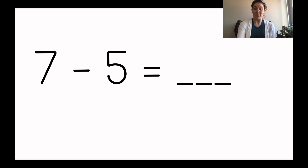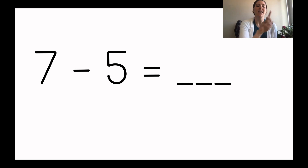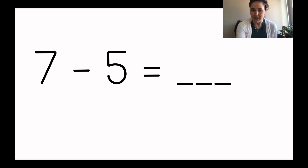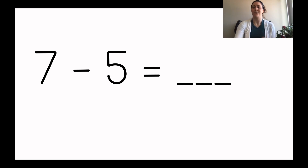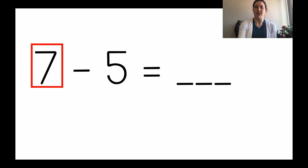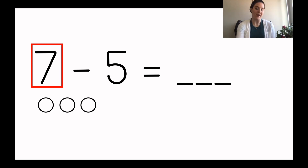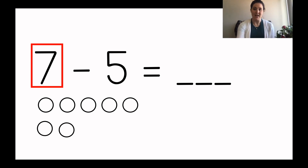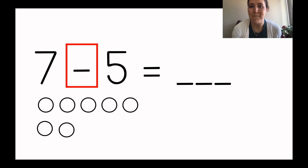Now I'm going to do the next one. First I'm going to read my number sentence. This says seven minus five equals blank. So I need to figure out what seven minus five equals. I know that first I'm going to draw seven circles because that's the group that I'm starting with. I'm going to draw seven circles: one, two, three, four, five, six, seven.